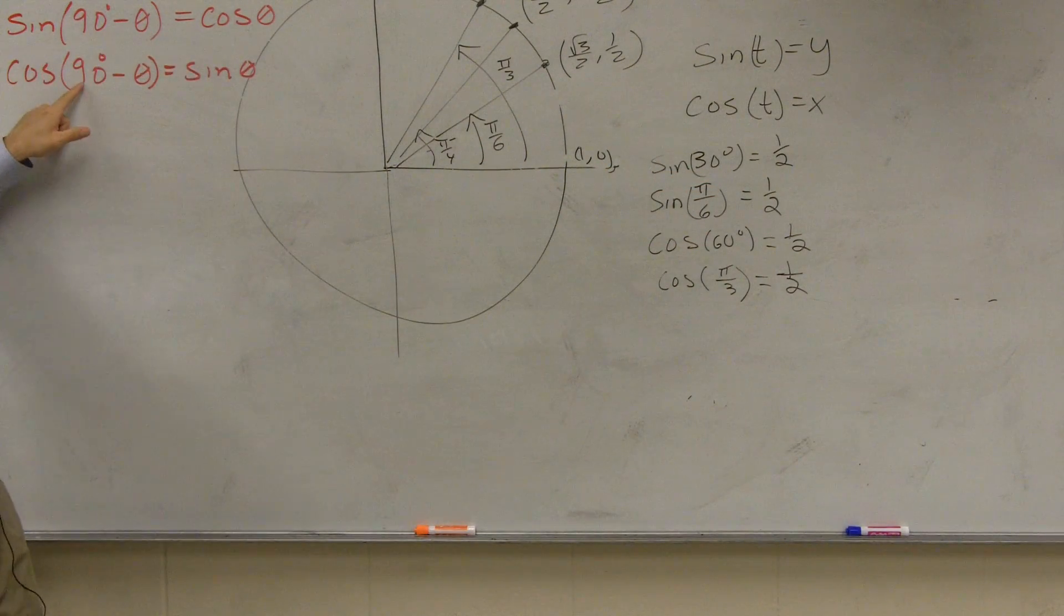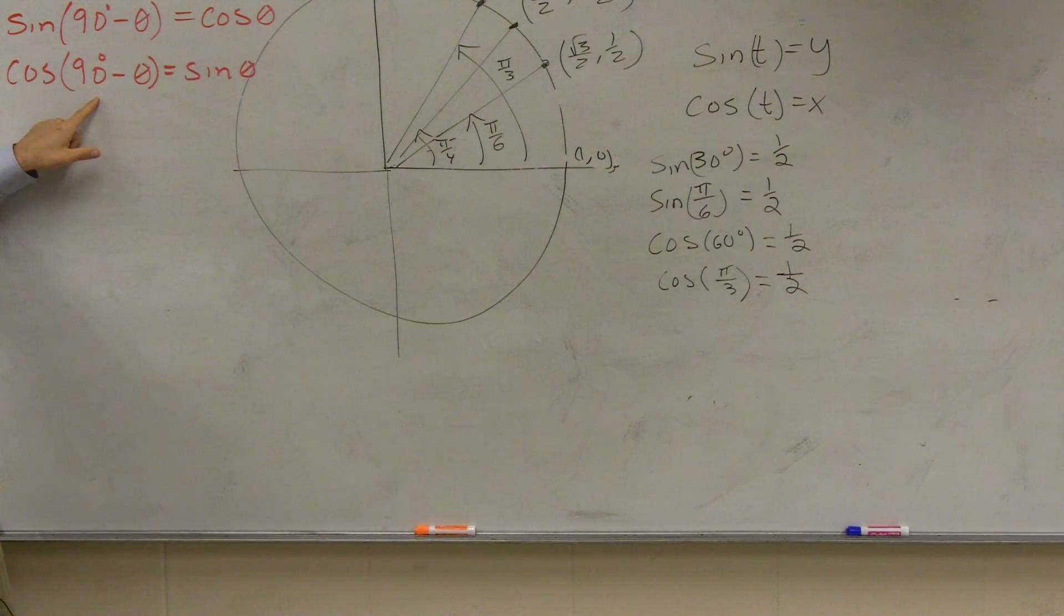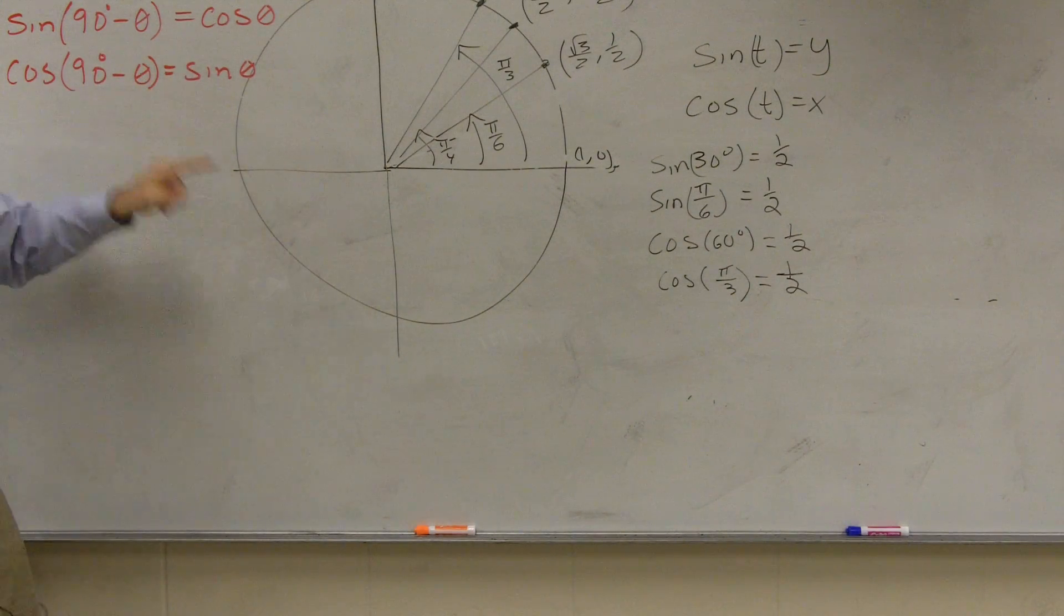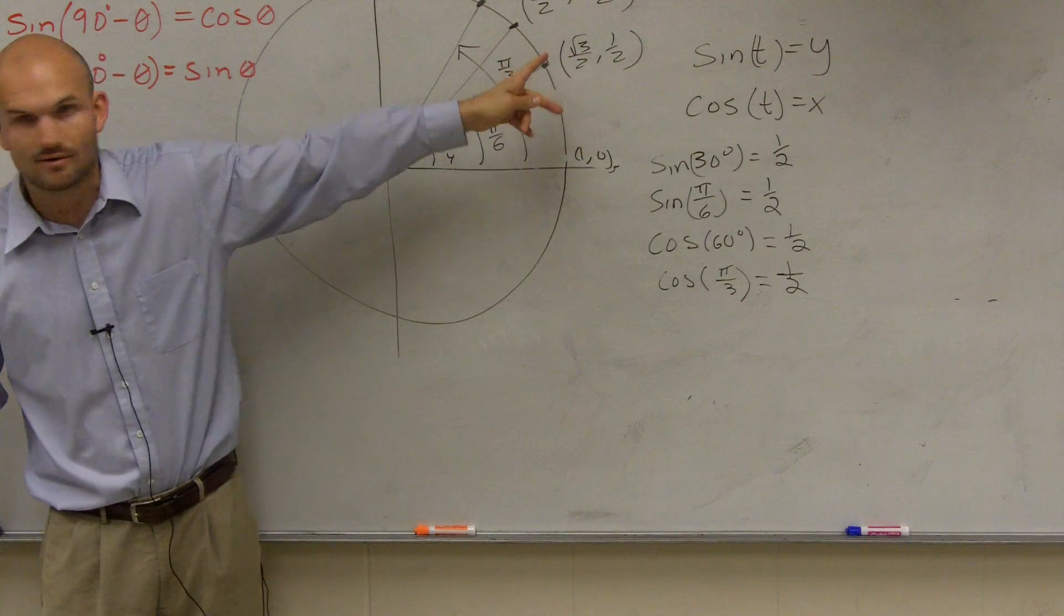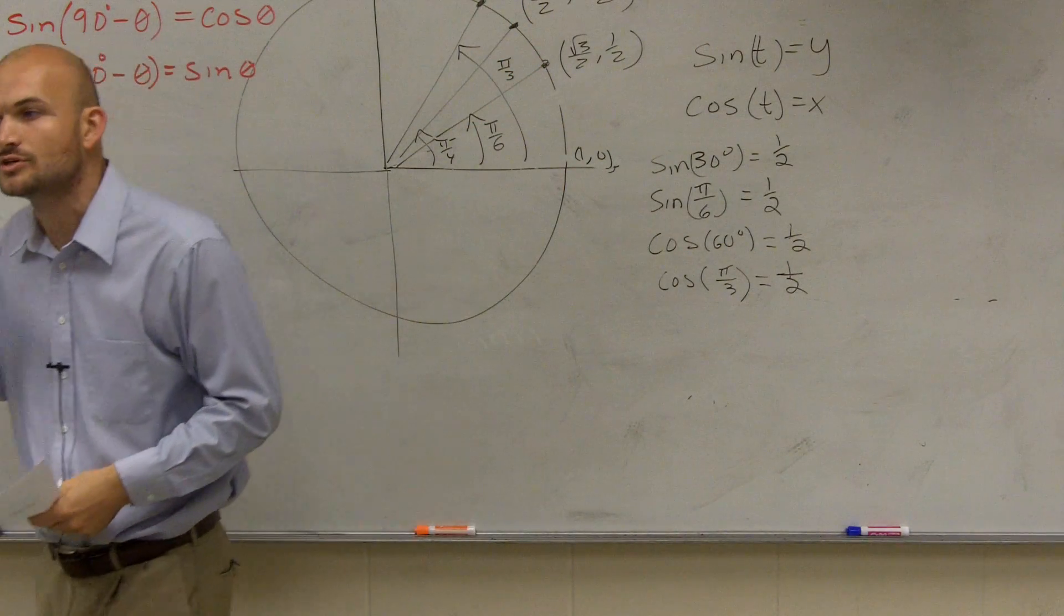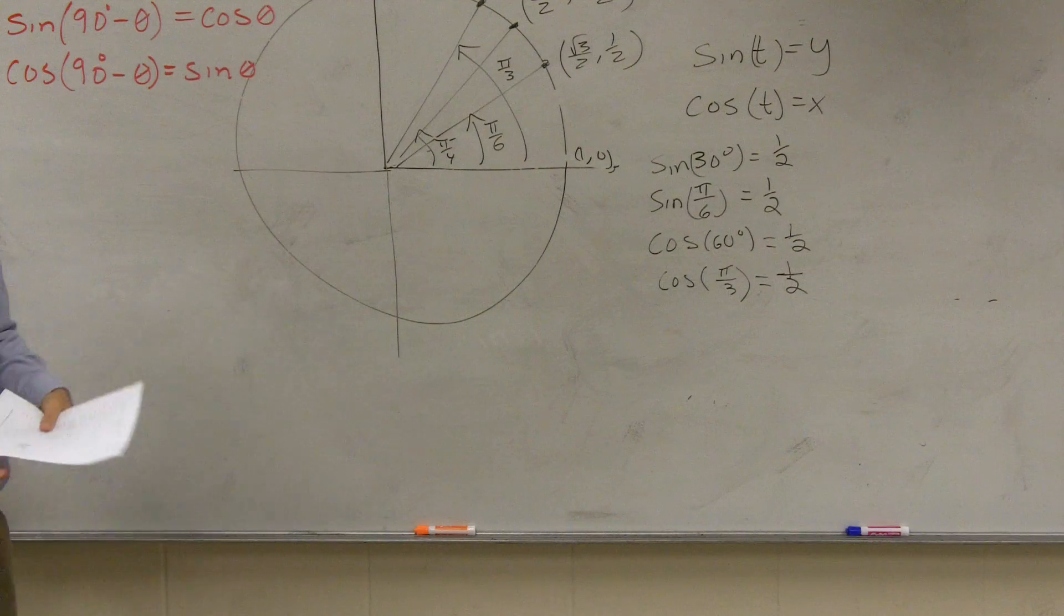We said sine was 30 degrees, right? So therefore, 90 minus 30 is what? 60. So is cosine of 60 the same as sine of 30? Yes. And you guys can prove it just by looking up here. You don't even need to look down there. You can just look up there and say, oh yeah, it's true. And that works for all of our identities.